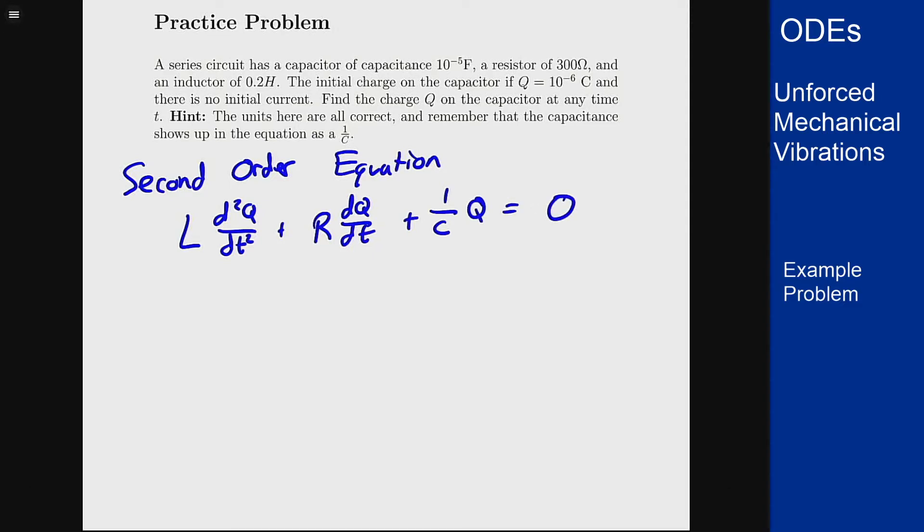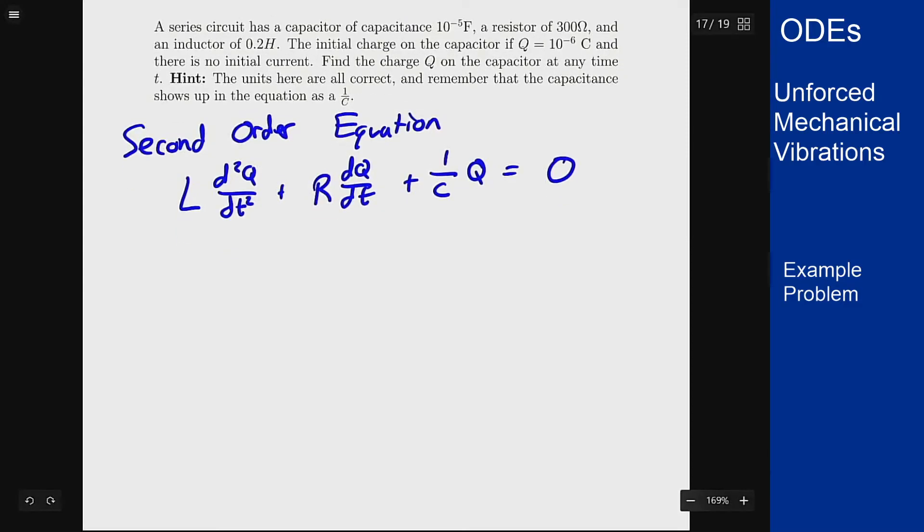Let's write in our numbers here. We have 0.2 times the second derivative plus 300 times the first derivative plus 10 to the fifth times q is 0 and we want to solve this so let's start by looking for the characteristic equation.